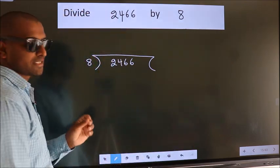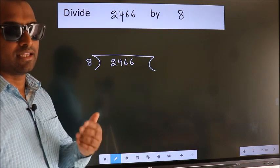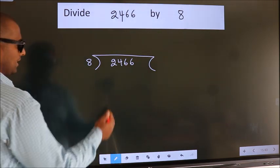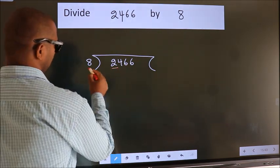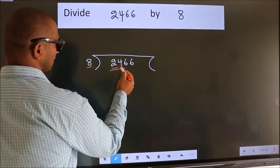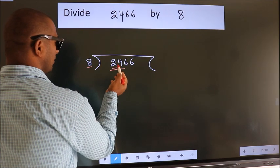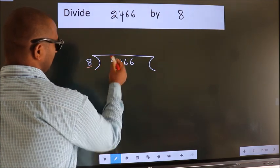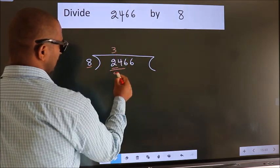This is your step 1. Next, here we have 2. Here 8. 2 is smaller than 8, so we should take 2 numbers: 24. When do we get 24 in the 8 table? 8 times 3 is 24.